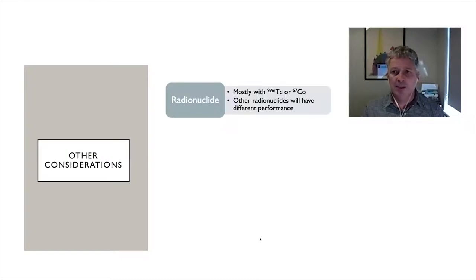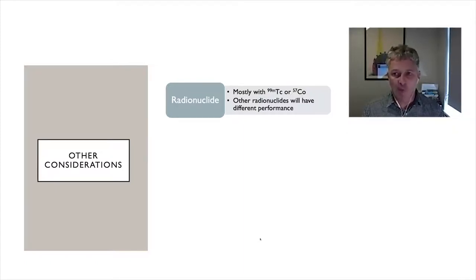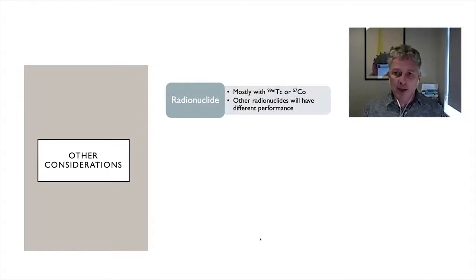Regarding radionuclide choice: most imaging is performed with technetium-99m, so we generally try to do most tests with technetium-99m. Sometimes cobalt-57 is used because it's more convenient and its emission properties are similar to technetium-99m. Other radionuclides will have different performance — for example, if imaging with iodine-123 or iodine-131, some measurements will change depending on the radionuclide used.